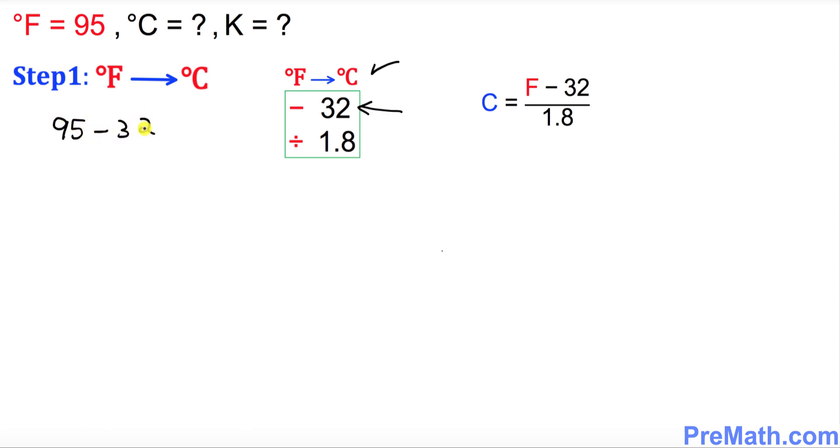Once you subtract 32, that is going to give you 63. The next step is you divide this number by 1.8, and that is going to give you 35. So that means C equals 35 degrees is our answer.